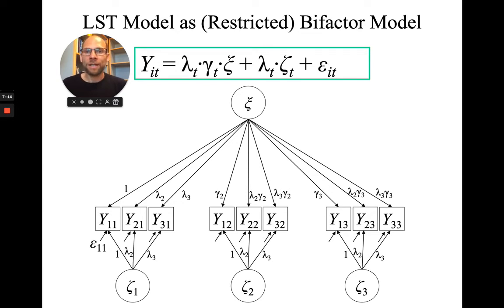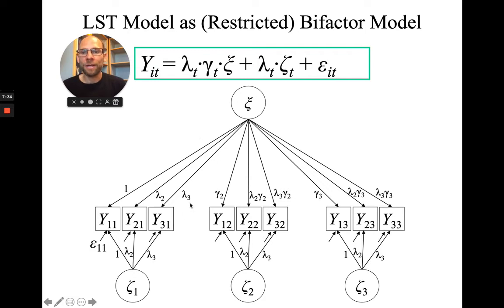The interesting thing here is the loading structure. For the first measurement occasion, the trait loadings are the same as the state residual loadings, because gamma at time point one is fixed to one for identification — so no separate gamma loading needs to be taken into account. The loadings must be constrained to be the same on the trait and on the state residuals.